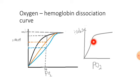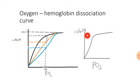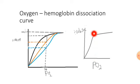Why sigmoid shape? At first it appears linear because each binding increases the next. But the curve reaches a stage where the hemoglobin is fully saturated with oxygen. When it is fully saturated — reaching 100% — even if the oxygen concentration changes, it will not affect the hemoglobin saturation or its affinity for oxygen.